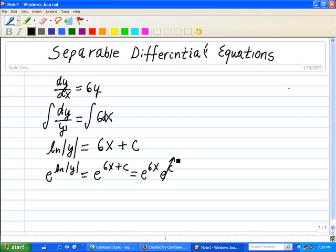But we can replace e to the c with another arbitrary constant c1, since c is an arbitrary constant, e to the c is just another arbitrary constant. So that yields c1 e to the 6x.